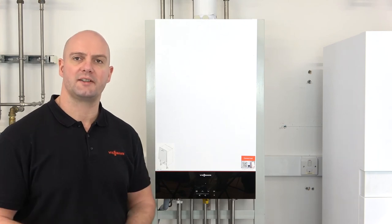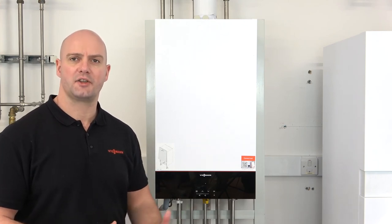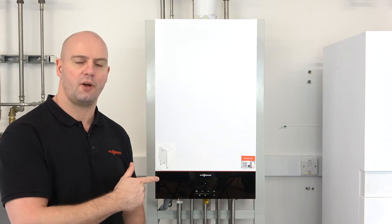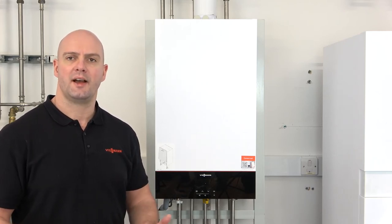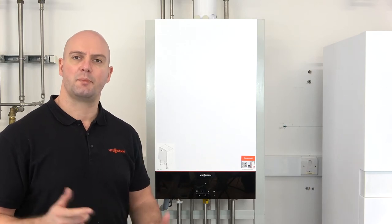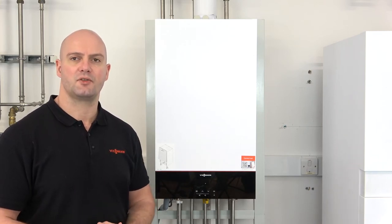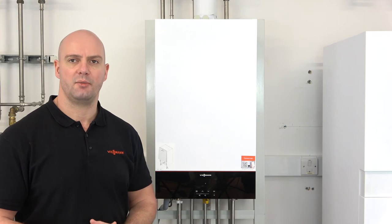Hi everyone, welcome along to our video today. Today we're going to show you how to access the service menu on our Viessmann 100 combi boiler. The service menu is what we sometimes refer to as the B menu. A full list of B codes can be found in our manufacturing instructions, which can be accessed on V-Books online.